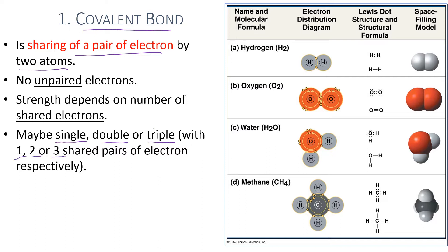Looking at examples in this table: the first is hydrogen gas, H₂. The hydrogen atom has one valence electron, which must satisfy the octet rule by sharing with another hydrogen atom's electron. The sharing of these two electrons results in one covalent bond formed between the hydrogen atoms within the hydrogen molecule.